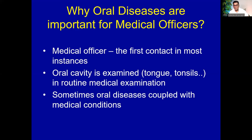Oral diseases are important for medical officers because most dental patients' first contact may be a medical officer, not the dental surgeon. They go and meet a medical officer even if it is a dental or oral condition. In your routine medical examination, you might be examining the oral cavity looking for the tongue, mucous membranes, and tonsils. Sometimes oral diseases are coupled with medical conditions — they simultaneously occur. So you should have some knowledge on major oral diseases and conditions.